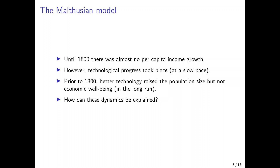We know that technological progress took place. There were technological improvements that increased productivity, for example in agriculture, but technological progress occurred at a slow pace. However, it was positive and per capita income did not rise at the same rate as technological progress took place. So prior to 1800, something else must have been going on that constrained economic progress. What we had was that prior to the Industrial Revolution, better technology mainly raised the population size, but not economic well-being in terms of incomes.